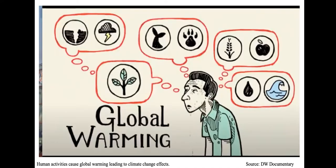This picture shows the problems we talked about earlier as a result of global warming. We see sea level rise, changes in weather, drought, and biodiversity loss. These pictures are giving an indication of what is being affected by global warming, which is a result of our activities.